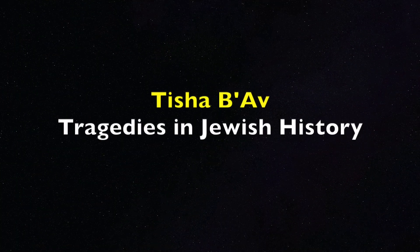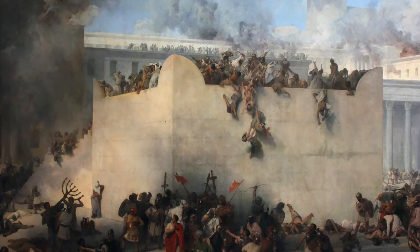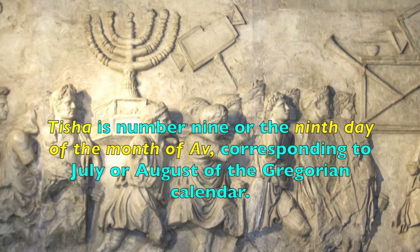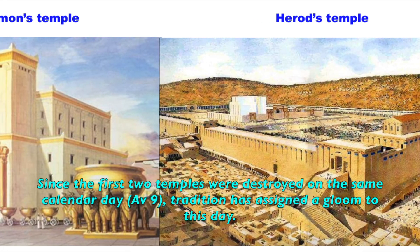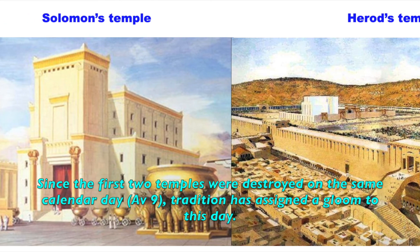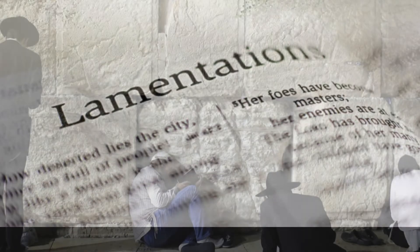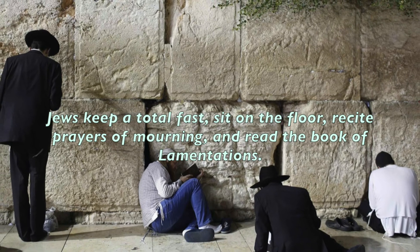Tisha B'Av is another special holiday — a Jewish fast day commemorating several tragedies the Jewish people have endured, including the destruction of the first and second temples. Tisha is number nine, referring to the ninth day of the month of Av, corresponding to July or August of the Gregorian calendar. Since the two temples were destroyed on the same calendar day, Av 9, tradition has assigned gloom to this day. The Book of Lamentations 1-3 says: 'Judah is gone into captivity because of affliction and because of great servitude.' Jews keep a total fast, sit on the floor, recite prayers of mourning, and read the Book of Lamentations.